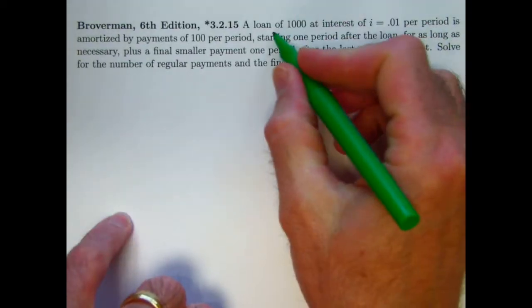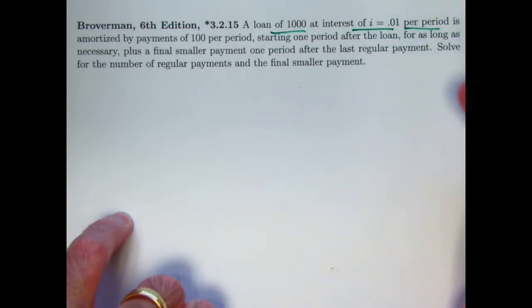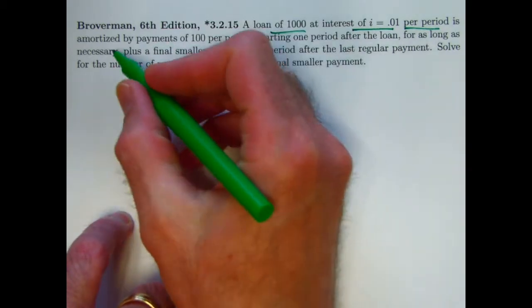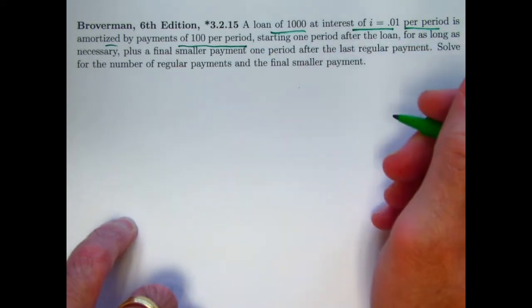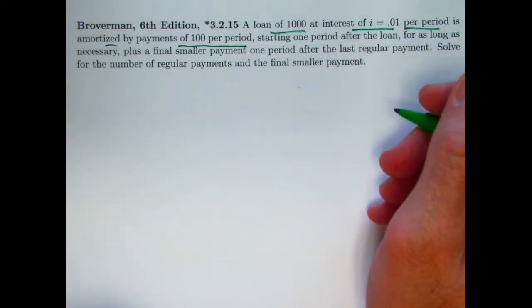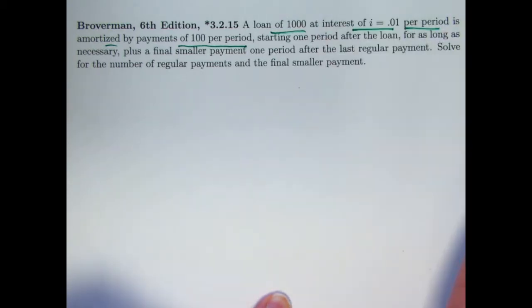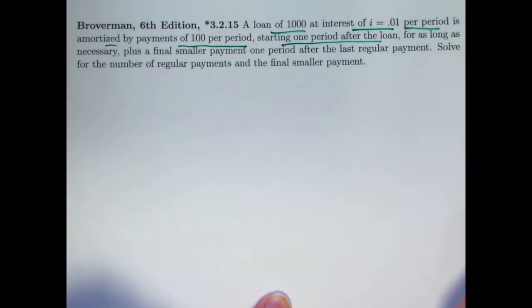It's a loan of a thousand, interest rate of 0.01 per period. It doesn't say what the periods are - they could be months, they could be years, it doesn't matter. It's amortized by payments of 100 per period, but we're not saying that 100 is found in the ordinary way. It could be smaller than what we'd find in the ordinary way if we specify a certain number of payment periods. It's starting one period after the loan so it's annuity immediate.